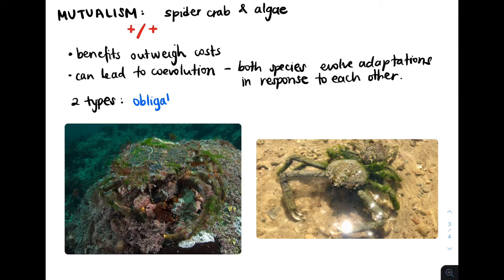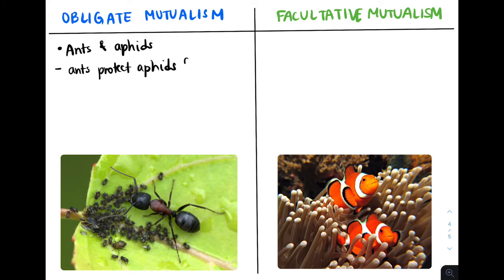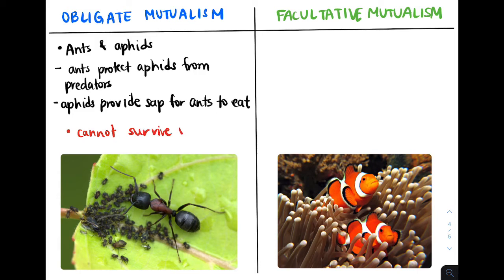There are two types of mutualism: obligate mutualism and facultative mutualism. In the example of obligate mutualism between ants and aphids, the ants protect the aphids from any predators. At the same time, the aphids provide food for the ants in the form of sap, which are the moist areas visible on the leaf. The key idea here is that one or both species cannot survive without the other — they are so tightly dependent that they need each other in order to survive.